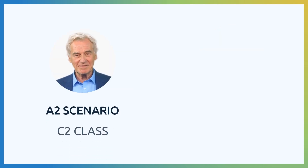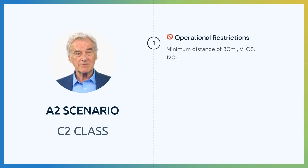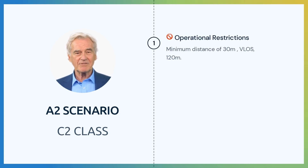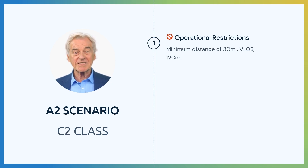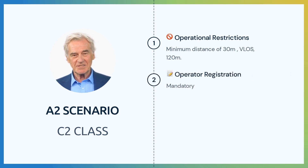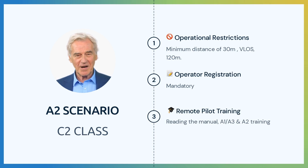Next up is the A2 category. Drones with C2 class will be able to fly in this category. You cannot fly over uninvolved people. Flying is allowed at a safe horizontal distance of at least 30 meters from non-participants. Every meter that you want to climb will force an additional one in horizontal safe distance. This distance can be reduced to a minimum of 5 meters if the low-speed mode function is activated. You shall fly in visual line of sight. The maximum height for a flight is 120 meters above the ground. Operator registration is mandatory. Reading the manual is required as well as completing the A1-A3 and the A2 training and examination.